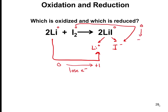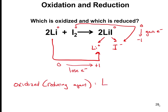Iodine goes from 0 to negative 1, so it gains an electron. Which is oxidized? Oxidized is losing — the OIL part of OIL RIG — so lithium is oxidized, and we can also call it the reducing agent. I₂ is reduced, or the oxidizing agent, going from 0 to negative 1. Make sure you're able to pick out whenever you have an ionic compound and break it into charges like we did back in Chapter 3.